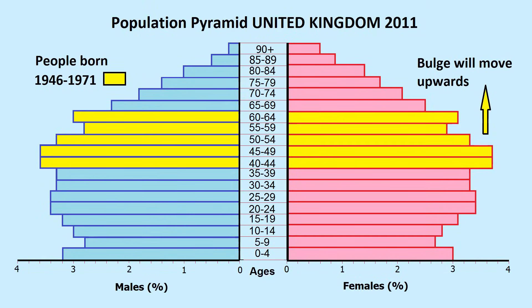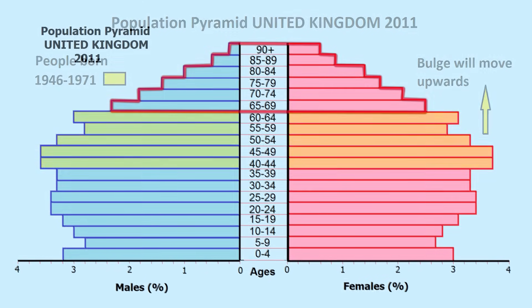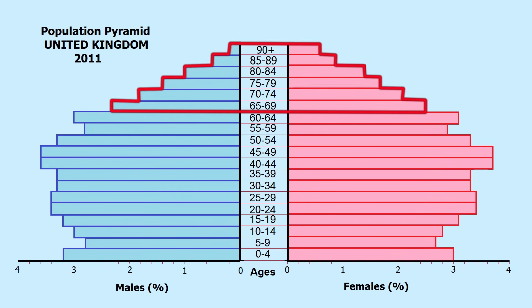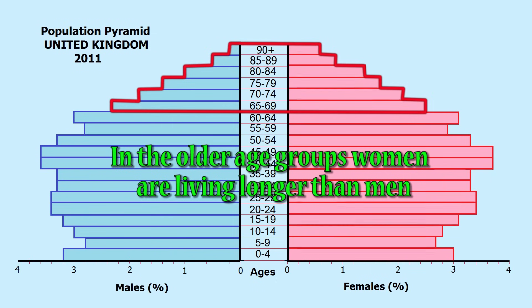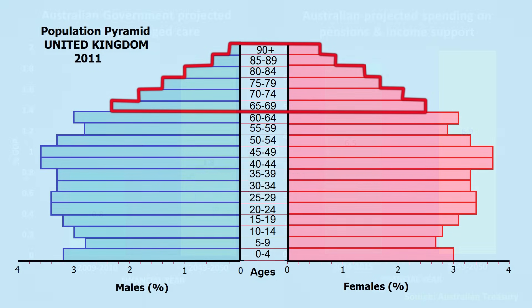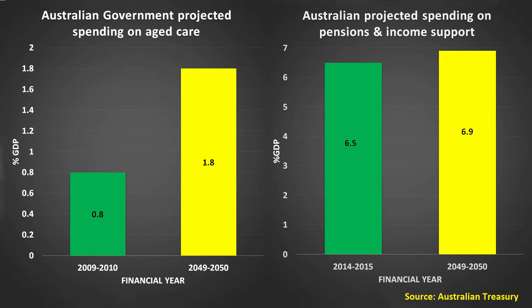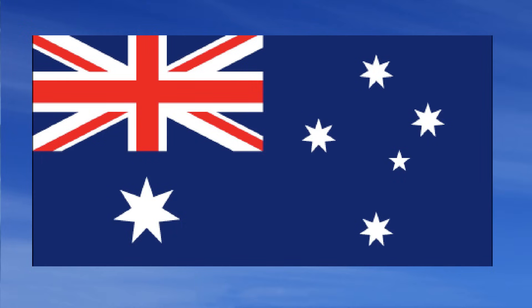As this population ages, the bulge of the baby boomers will climb up the pyramid. Also notice that in the older age groups there is no symmetry between males and females. This is due to the tendency for females to live longer on average than males. This aging population has implications for governments that will have to meet future medical needs and age services. The Australian government, for example, responded to projections in the numbers of old people by raising the retirement age from 65 to 67.